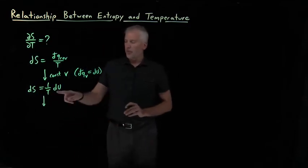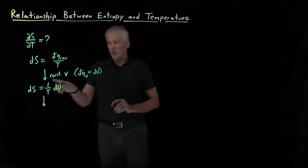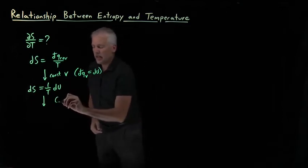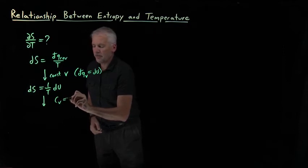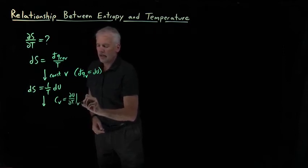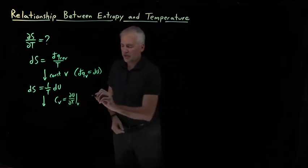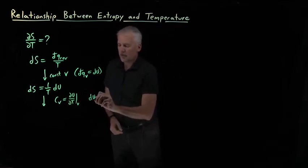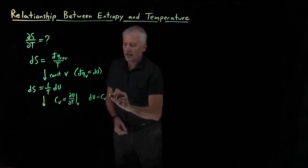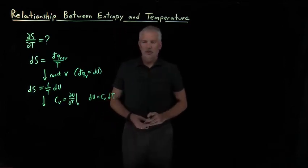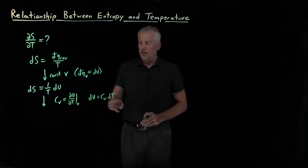As one more step, we know something else about the internal energy. We know that since we're at constant volume already, the heat capacity at constant volume is du dt at constant volume. So if I just rearrange this expression, if we're at constant volume, the change in the energy is heat capacity times change in temperature. So du is cv dt.